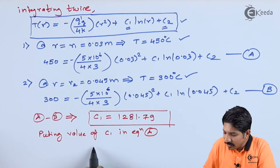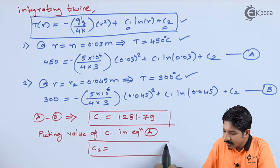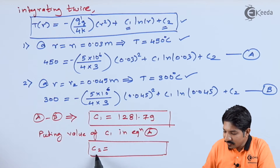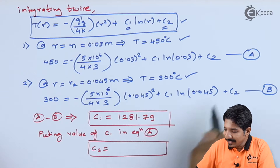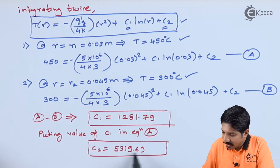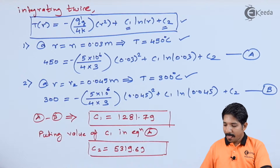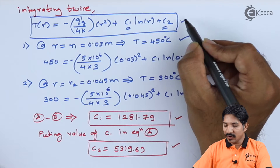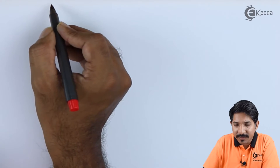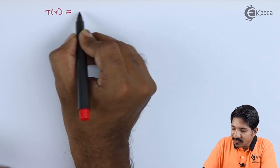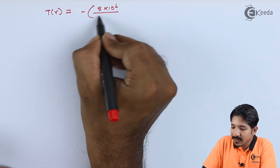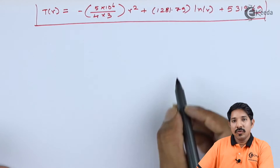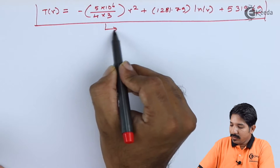Substituting C1 = 1281.79 back into equation (A), we get C2 = 5319.69. With both constants known, the final temperature distribution equation is: T(r) = −(5×10⁶ / (4×3))·r² + 1281.79·ln(r) + 5319.69. Since this is a quadratic equation, temperature depends parabolically on r.